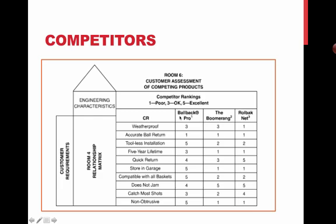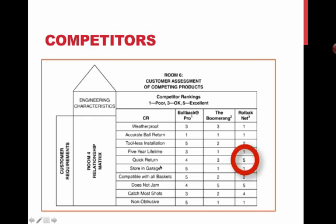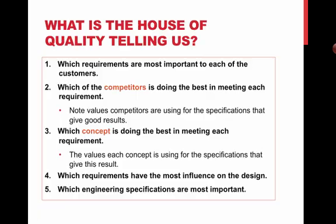The design team looked at three competitors to see how they're performing. Competitor number one, for example, is doing a poor job ensuring their system is weatherproof, while the other two are doing okay. On the other hand, the third competitor is doing an excellent job on quick return. One room not included in the textbook example is the benchmark section — we would go back to those competitors and capture specifications with actual hard numbers to know their exact numerical values more specifically.